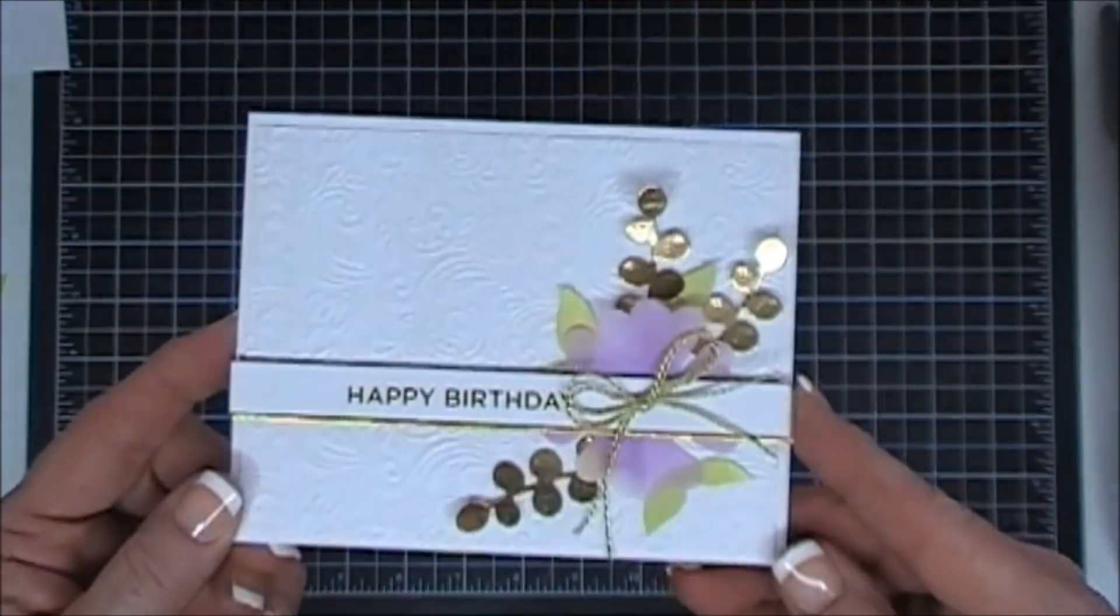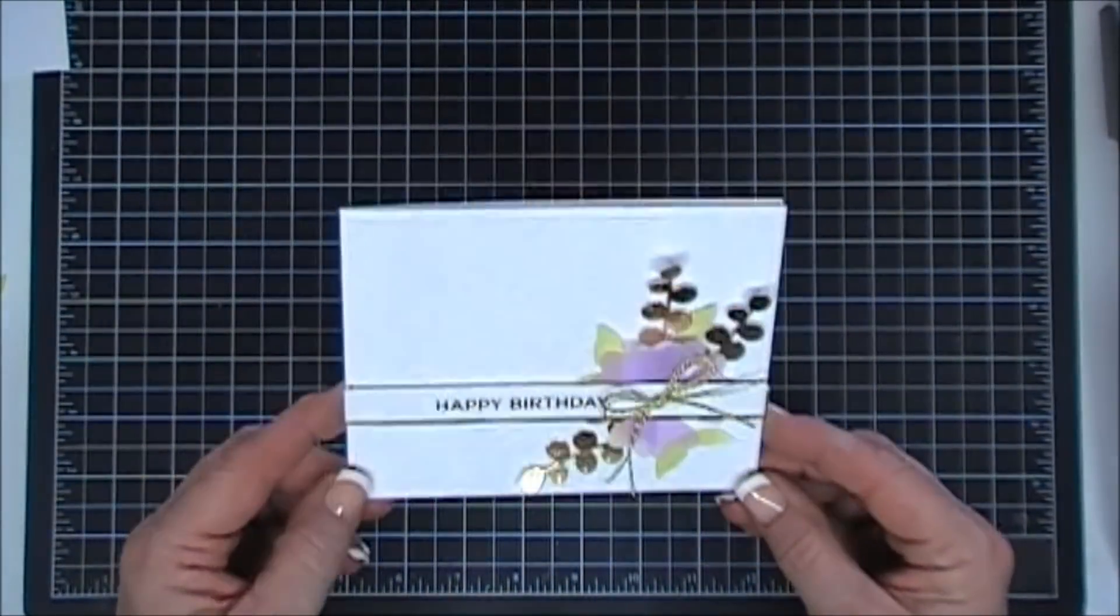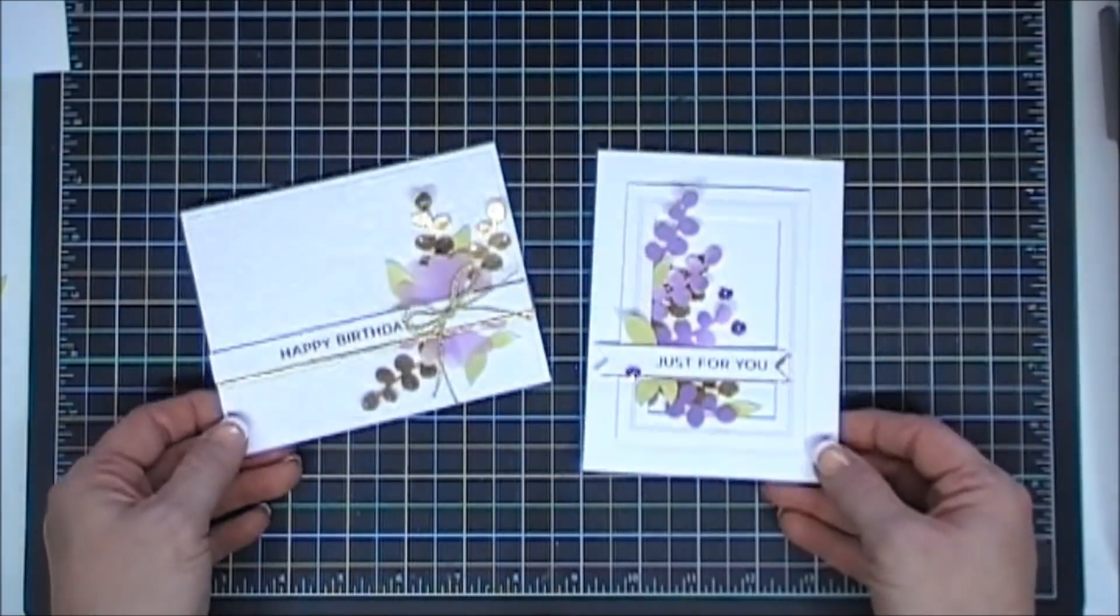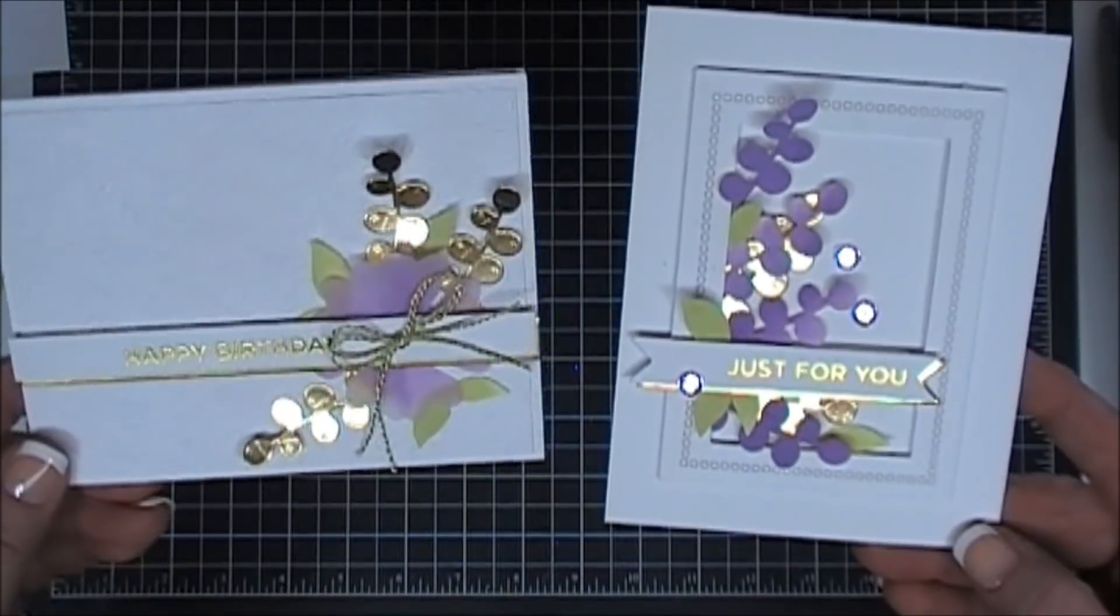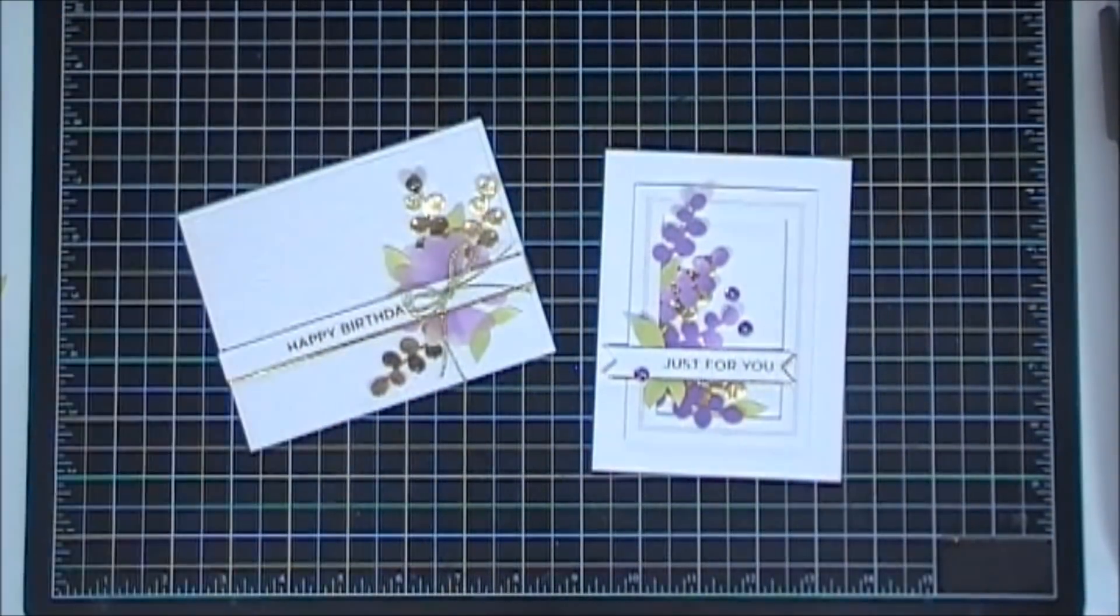I really think this is lovely to have in your stash. That completes my second project. We'll grab our first project and so these are the two cards that I made with the Glimmer Hot Foil Club for February 2019. Wonderful sentiment strips.